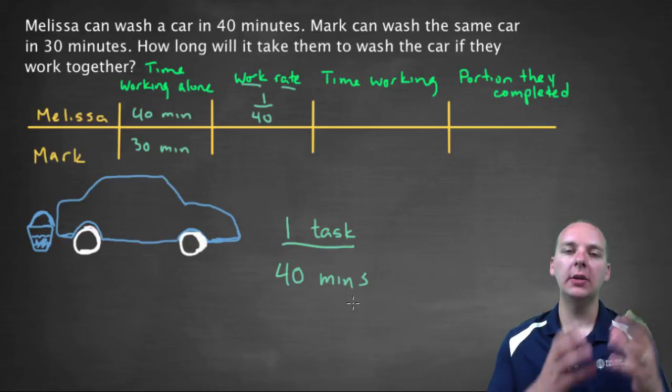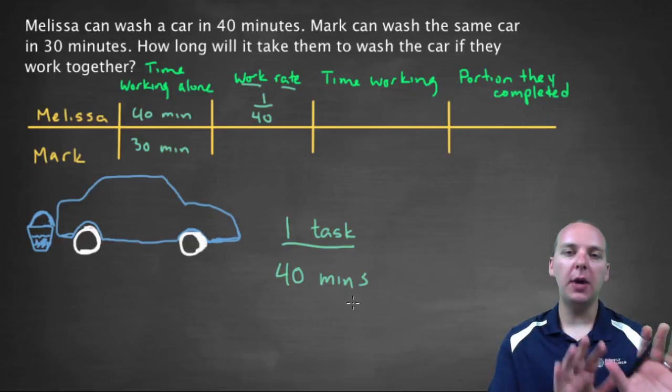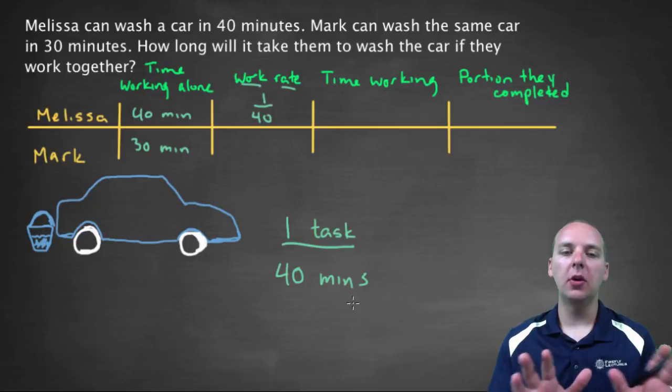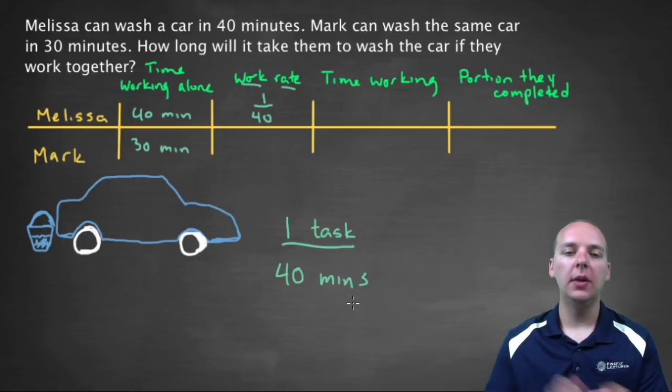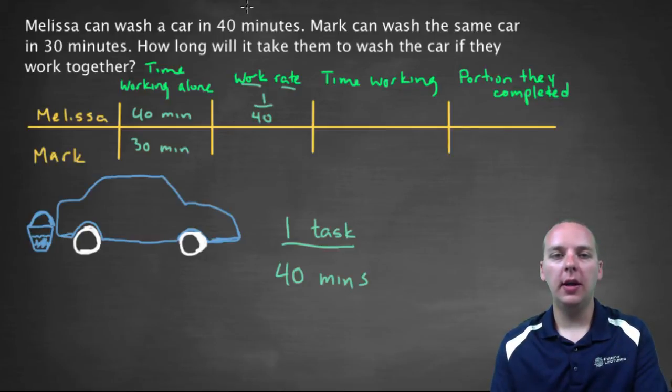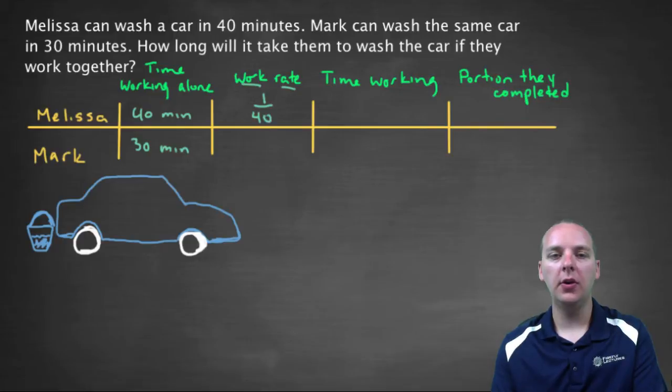Alright, so that's why it's one over 40. Just by herself, she can complete the whole task, one whole task, in 40 minutes. Whereas on the other hand, Mark's work rate would be one over 30, because he can complete one whole task, one whole car, in 30 minutes.